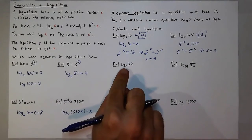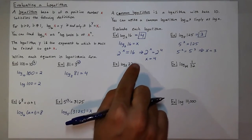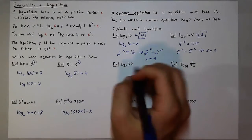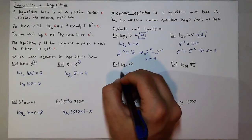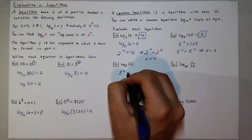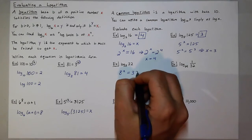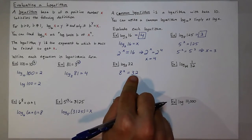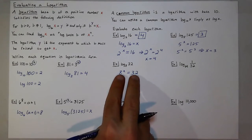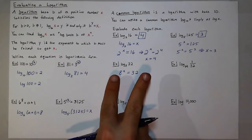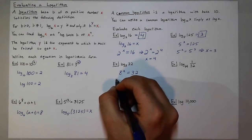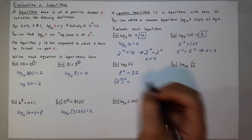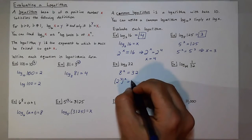Now, for log base 8 of 32, it may not be as obvious as what that power is. So let's break down what this means. We're looking for what power do we raise 8 to to get 32? Now, 32 is not a power of 8. But, both of these numbers are powers of 2. So I can rewrite 8 as 2 to the 3rd power to the x and 32 as 2 to the 5th power.